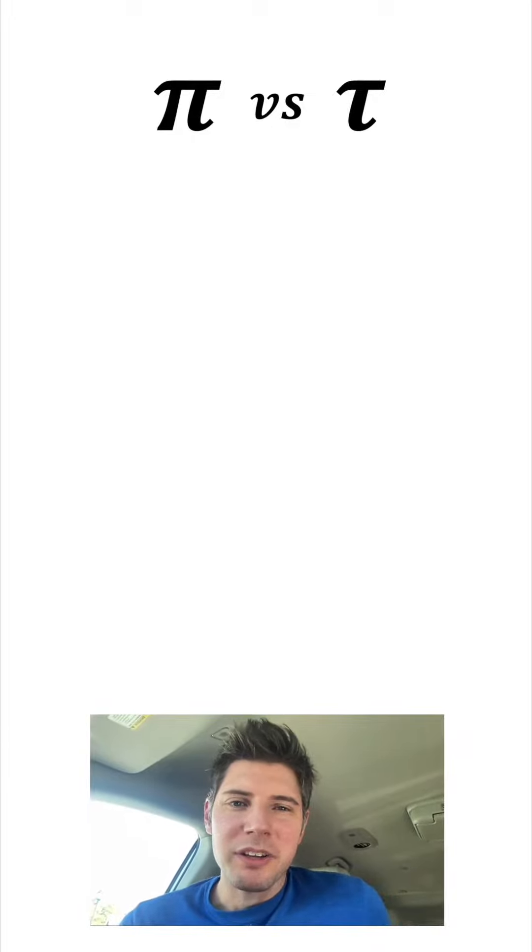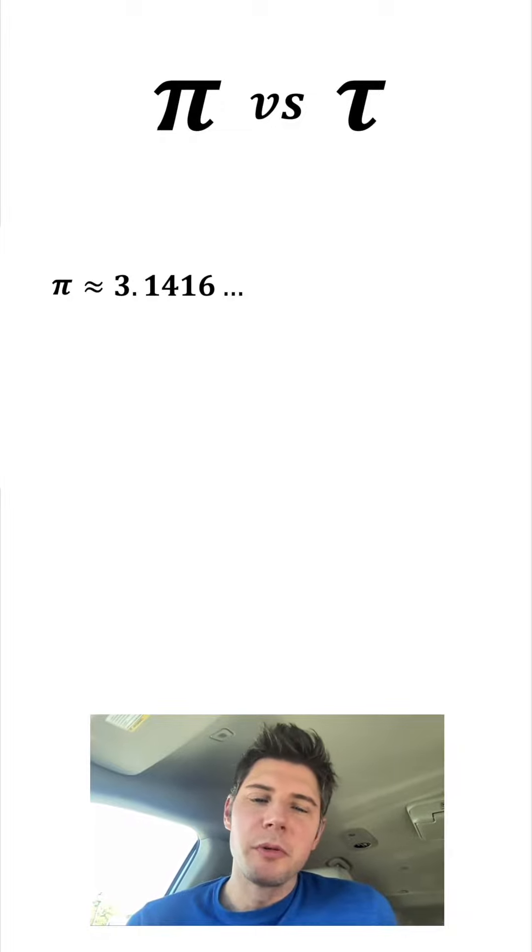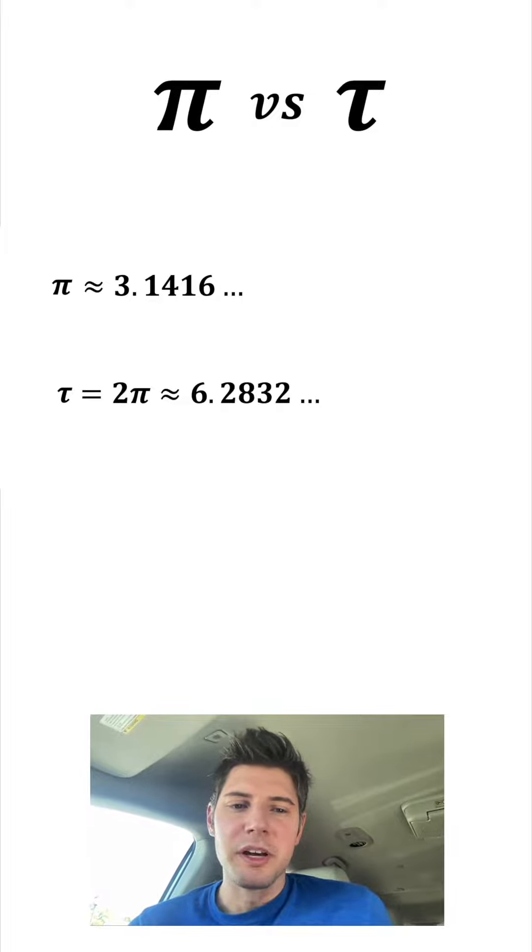I've gotten a couple requests to talk about tau. I believe the context of this is pi versus tau. Pi is about 3.1416 and tau is double pi, so it is approximately 6.2832.